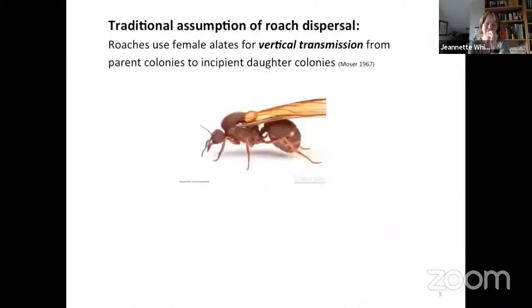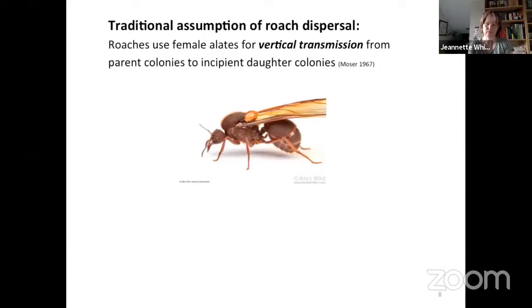The main question we'll explore today is: how does Attaphila fungicola disperse between host leafcutter colonies? In this photo, you can see the roach attached to a leafcutter female alate or winged queen departing on its nuptial flight, which might suggest a straightforward answer. We collect roaches attached to female alates during leafcutter colony preparations for nuptial flights, when thousands of alates — both females and males — come to the surface of their nest. Usually about 4 to 7% of female alates in colonies that have roaches have a single attached roach on them, but not the male alates. This hitchhiking behavior strongly suggests that roaches use female alates for vertically transmitting from parent leafcutter colonies to their incipient daughter colonies — that is, roaches remain with female alates as they become queens initiating new colonies. This has been the traditional assumption.